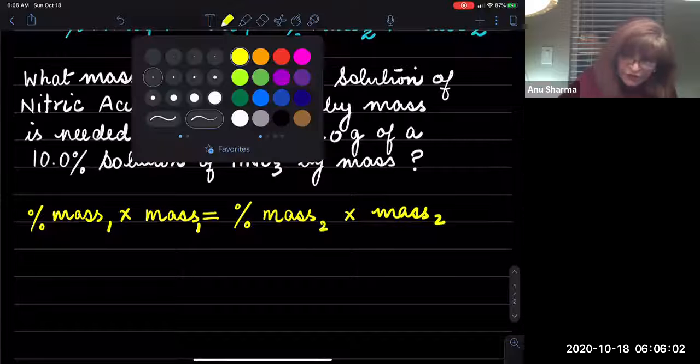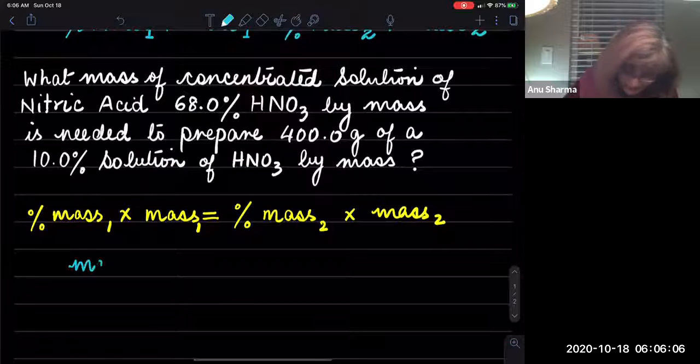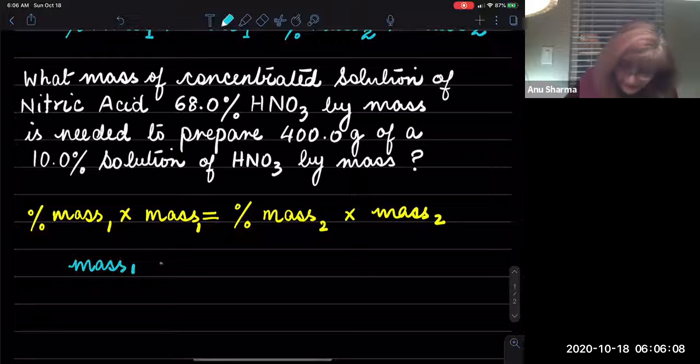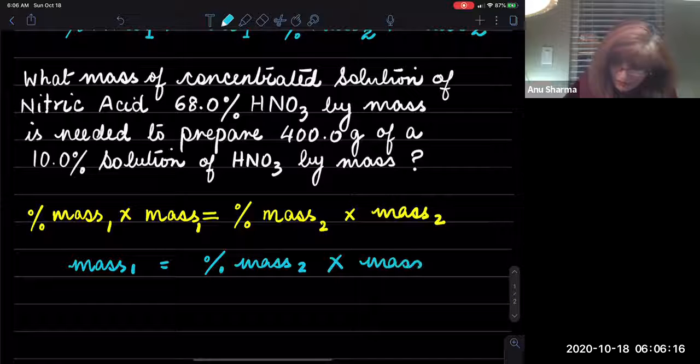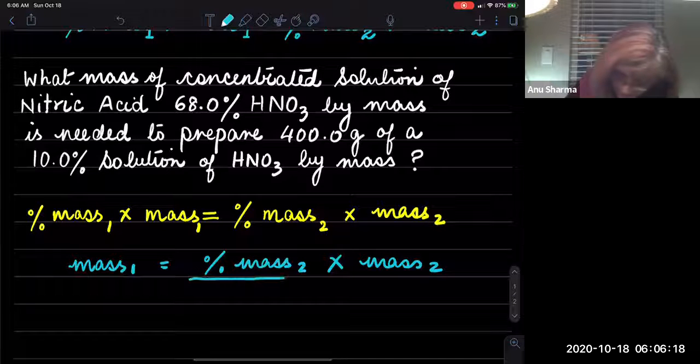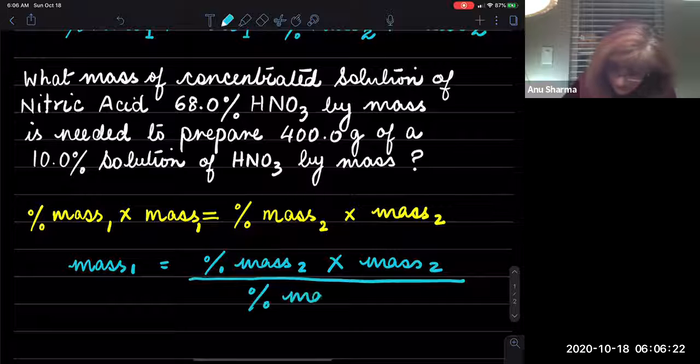So when you do the algebraic conversions, you are going to get mass₁ equals percentage mass₂ multiplied by mass₂ divided by percentage mass₁.